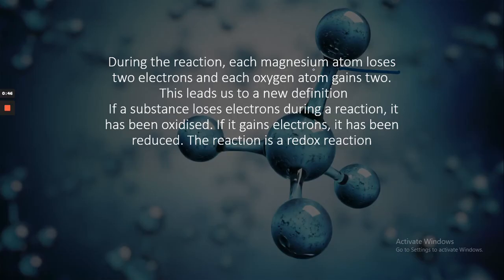During the reaction, each magnesium atom loses two electrons and each oxygen atom gains two. This leads us to a new definition: if a substance loses electrons during a reaction it has been oxidized. If it gains electrons it has been reduced. The reaction is a redox reaction.